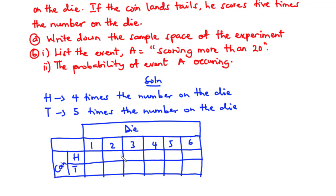When you throw a die, the number of possible outcomes are six — you can have a one, two, three, four, five, or six. And when you toss a coin, the possible outcomes are heads or tails.